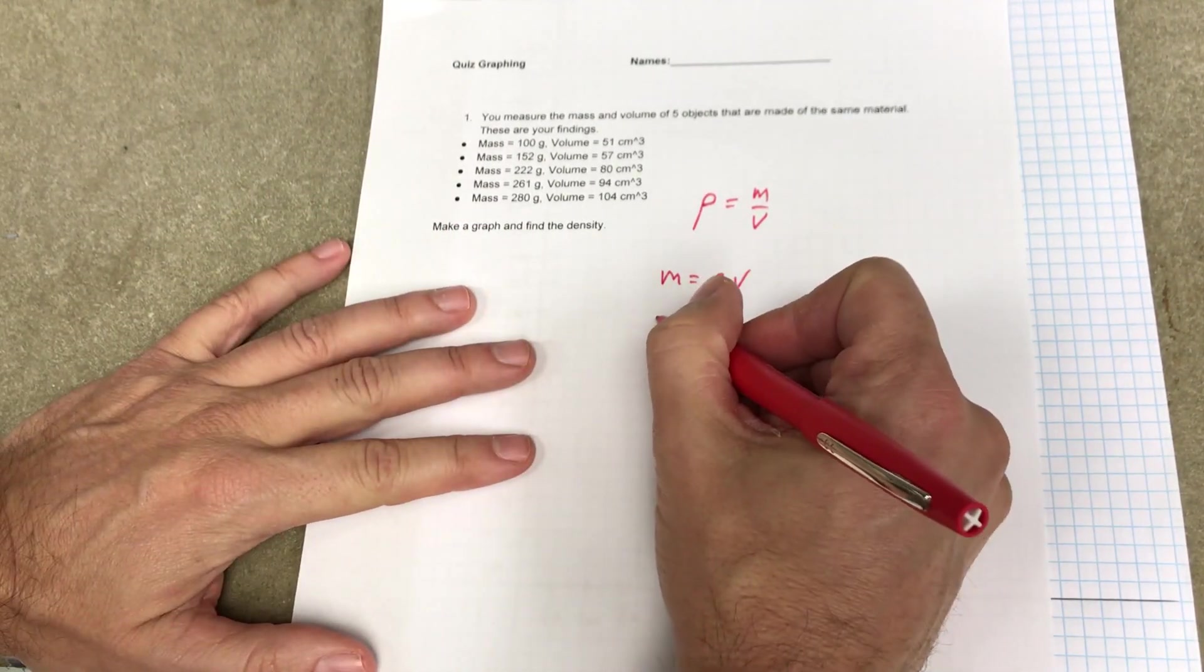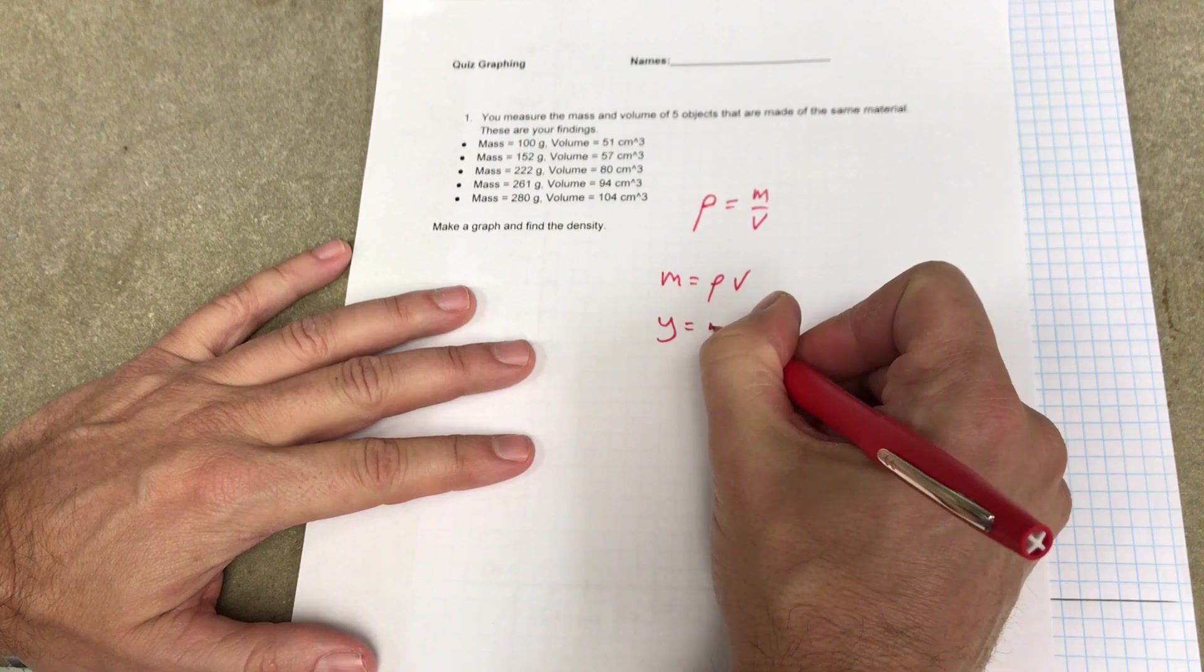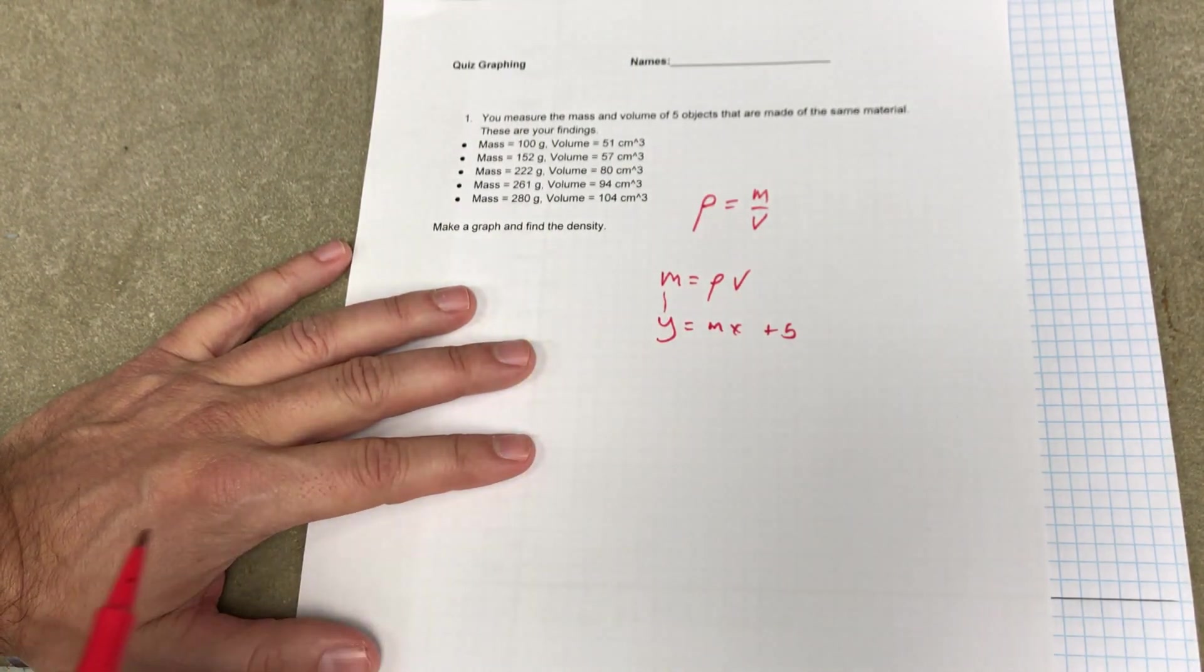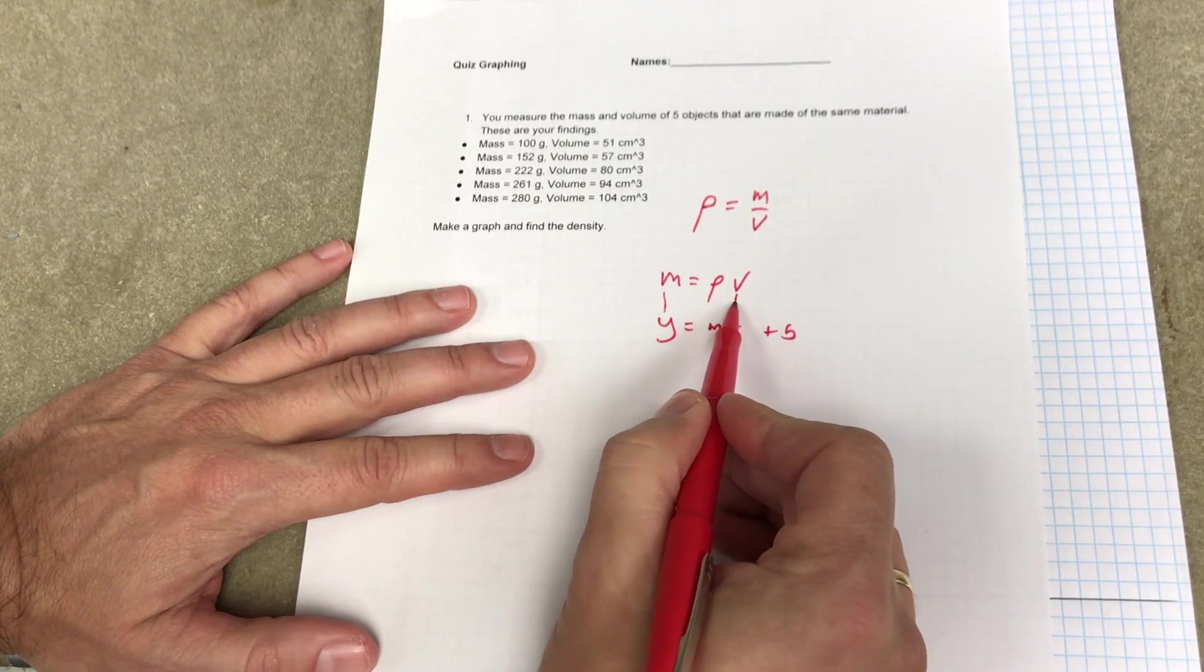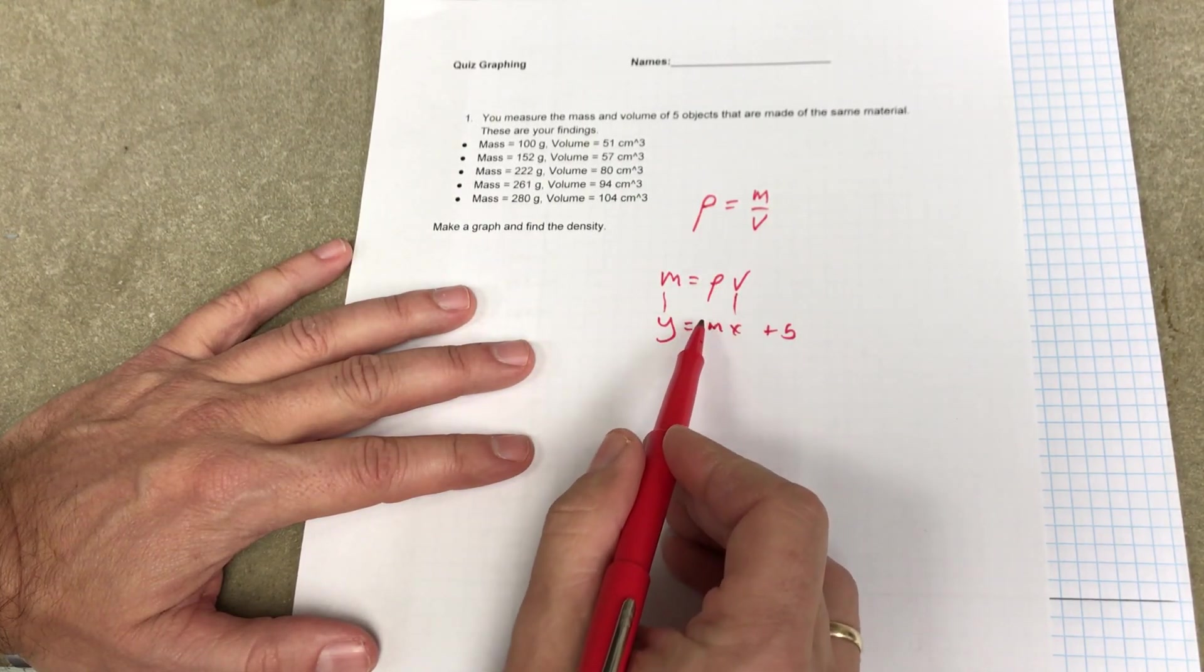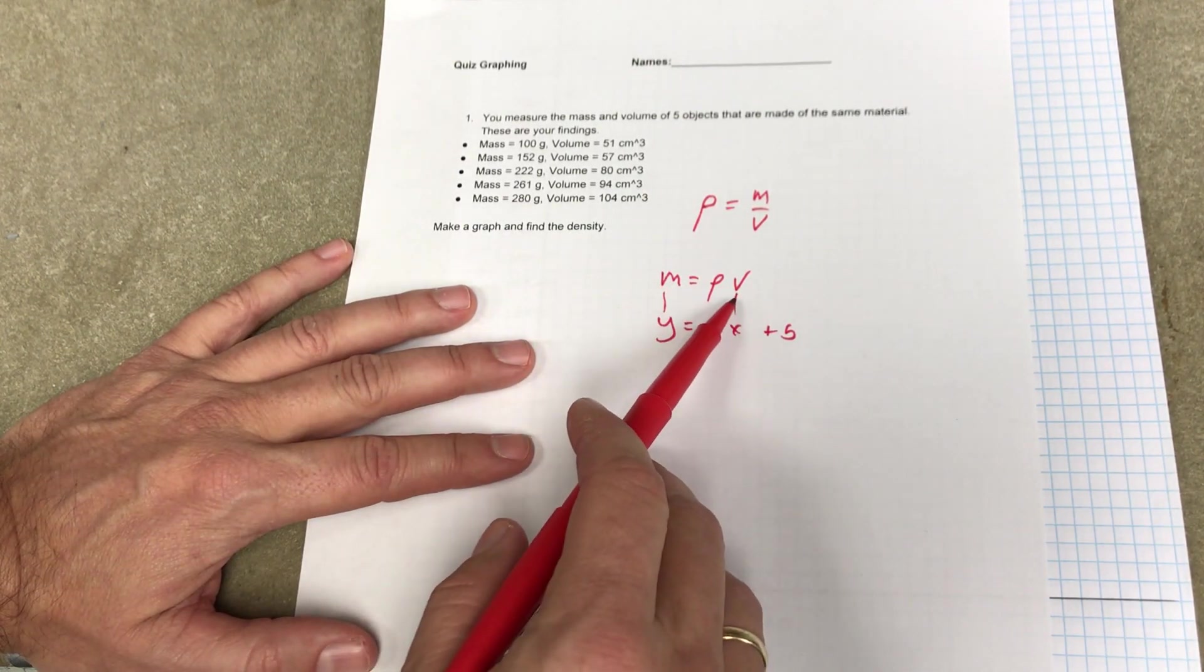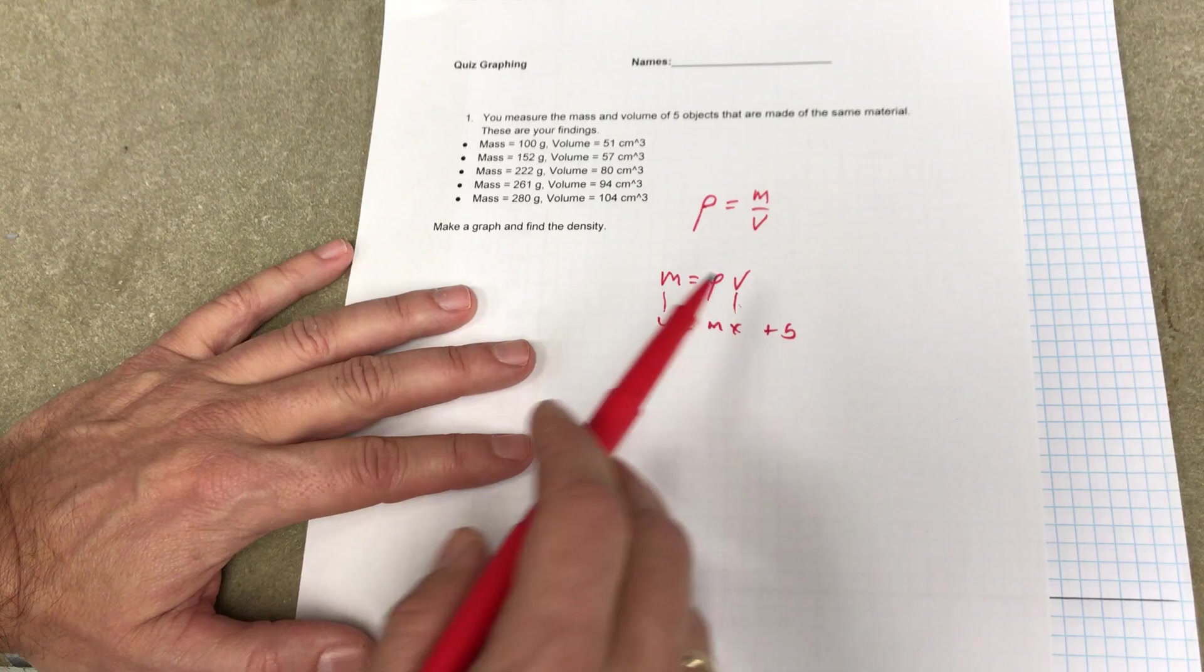Now, if you think about that as a normal equation, y equals mx plus b, then the mass is the y-coordinate, the volume is the x-coordinate, and the density is the slope. And there's no intercept. So I'm going to plot y on the vertical axis, volume on the horizontal axis, and I'm going to find the slope.